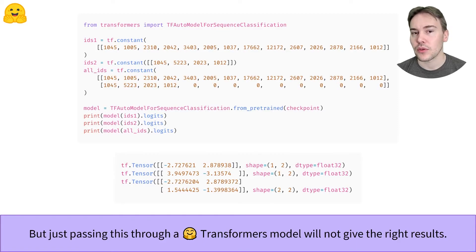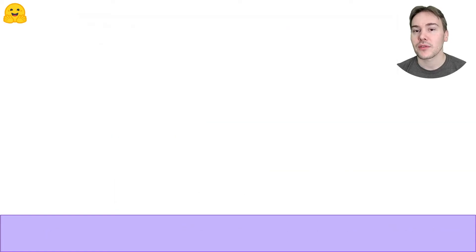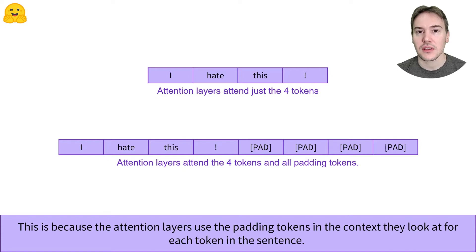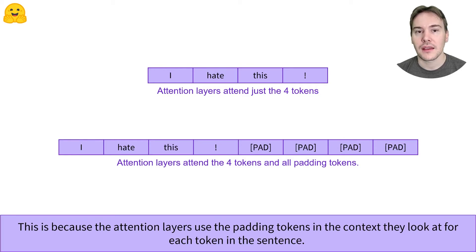Is that a bug in the transformers library? No. If you remember that transformer models make heavy use of attention layers, this should not come as a total surprise. When computing the contextual representation of each token, the attention layers look at all the other words in the sentence. If we have the sentence with several padding tokens added, it's logical we don't get the same values.